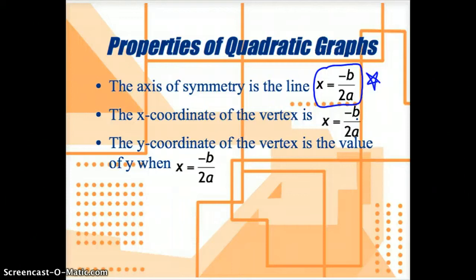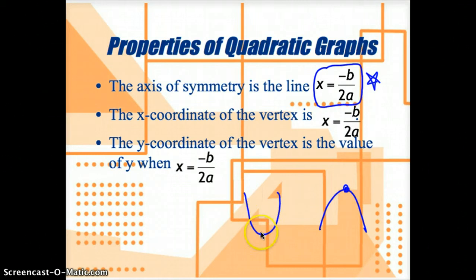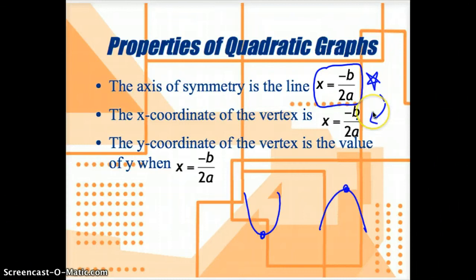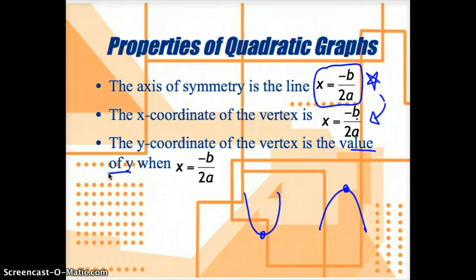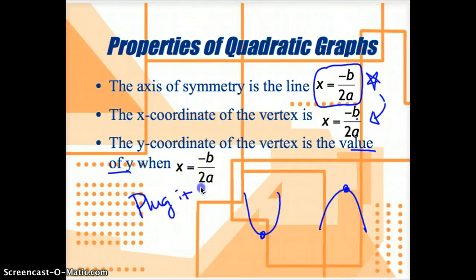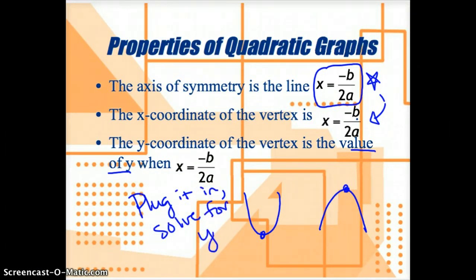The x-coordinate of the vertex — remember the vertex is that maximum or minimum point — is always going to be on that line of symmetry. So the x-coordinate of the vertex is just the same thing as the axis of symmetry equation: x equals negative b over 2a. The y-coordinate of the vertex is the value of y when x equals negative b over 2a, which means we plug that x value in and solve for y.